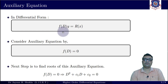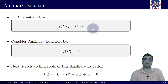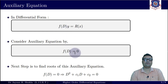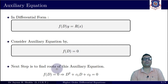Once we derive the operator form f(D)·y = r(x), to find the complementary function we focus on the auxiliary equation, derived by taking f(D) and equating it to zero. Whatever the combination of D and constants in f(D), we equate to zero. That equation is known as the auxiliary equation or characteristic equation, and the next step is to find its roots.